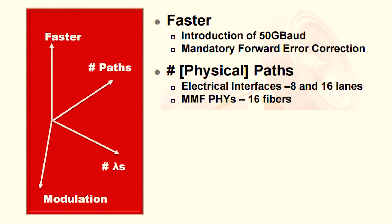We also have multi-fiber variants. In the case of multimode fiber, we're using 16 fibers in each direction to achieve 400 gig with 25 gig over each fiber. In addition, we have a four-lane single-mode version to achieve 400 gig over 500 meters on parallel single-mode fibers, with each fiber carrying a 100 gig PAM4 signal.